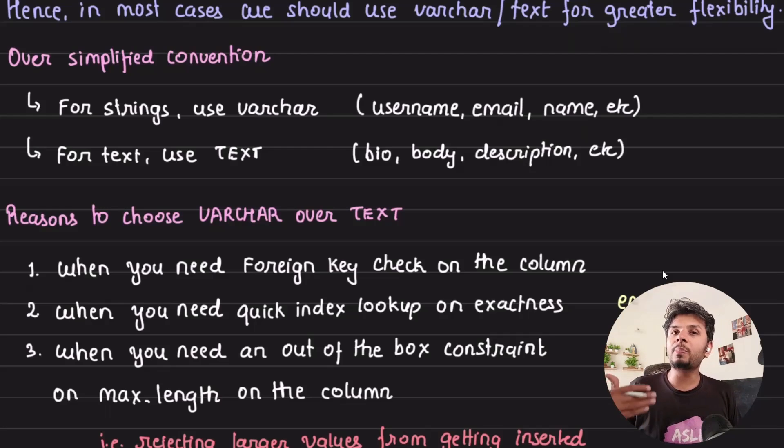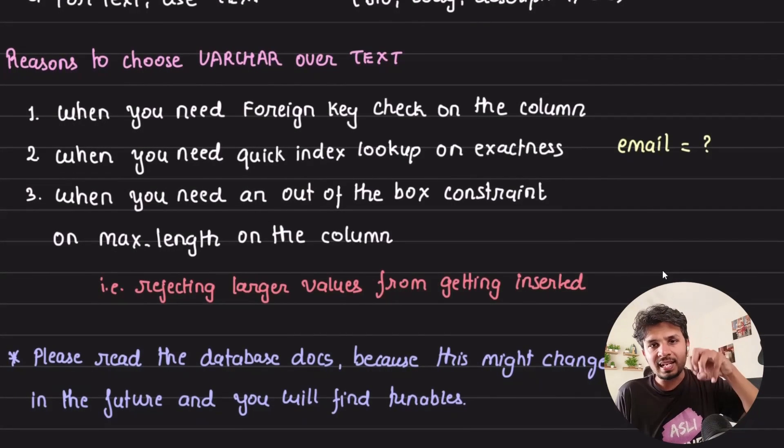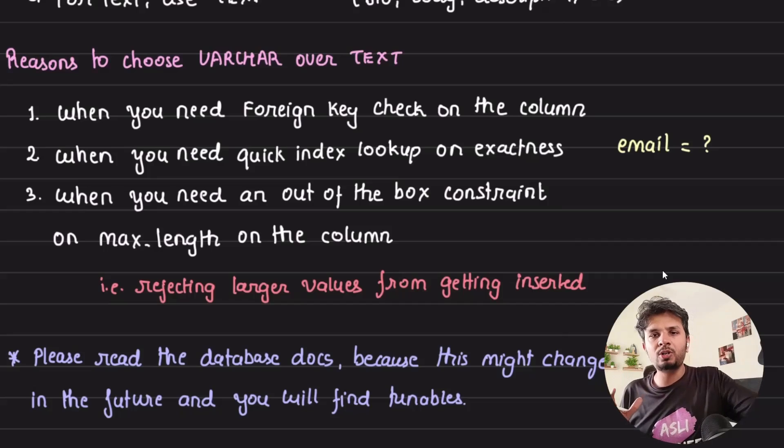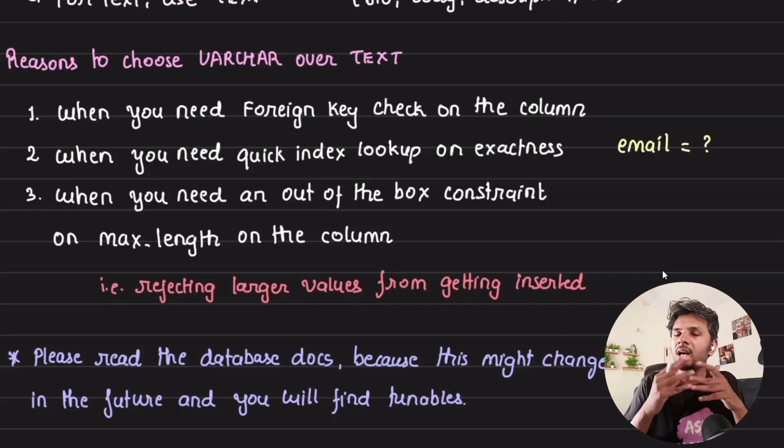And when you need out of the box constraint of max length. For example, at the database level itself you want to prevent people from inserting very large amount of data. If bio has a maximum limit of 20 characters, you can enforce this constraint on the database layer itself by setting it to varchar. You can also always apply this check on the business logic side, but if you still want to enforce it on the database side, varchar is the way to go. This allows you from storing large values in the row itself.